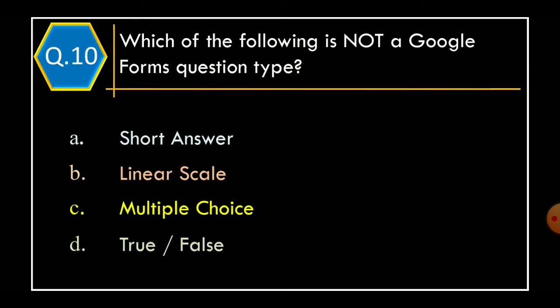Question 10. Which of the following is not a Google Forms question type? Option A, Short Answer; Option B, Linear Scale; Option C, Multiple Choice; Option D, True or False. And the correct option is Option D, True or False.